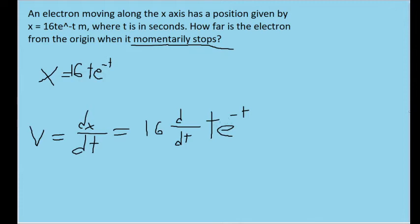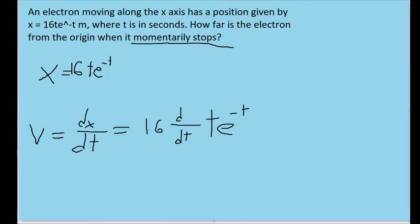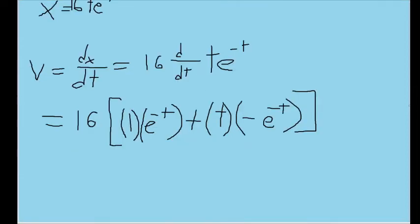So we can solve this derivative using the product rule of differentiation. In the product rule, we take the first term, find the derivative of that and multiply it by the second term unchanged. So that's one, the derivative of t with respect to t, times e to the power of negative t.